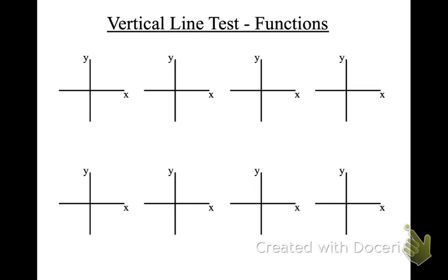The way we can tell if it's a function on a graph is we can do a vertical line test. I'm going to place my line on the graph and run a vertical line through the actual graph. If I ran it across the line, there's no point at the same given point in time where it crosses the line at two places. So this is a function.